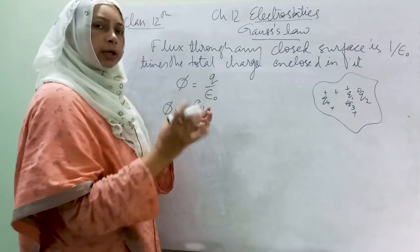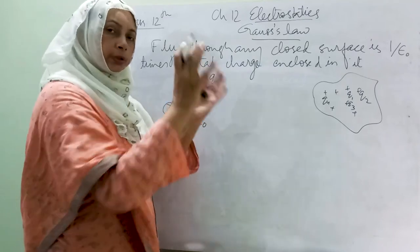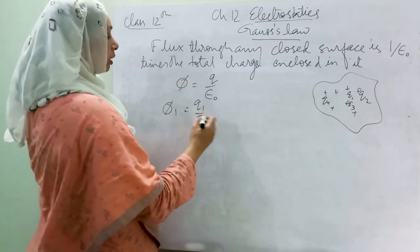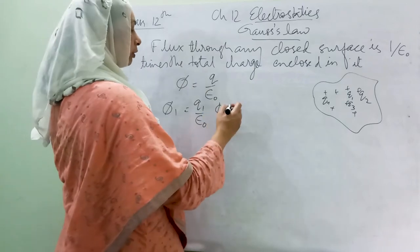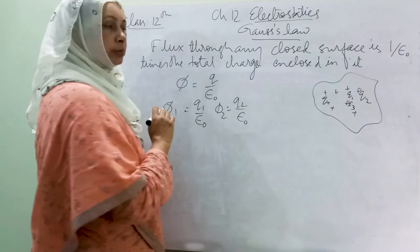We will calculate each of the fluxes due to each of the charges and then we will add them up. Phi2 will be the flux due to the charge Q2 divided by epsilon naught.